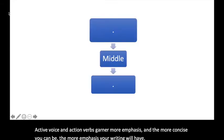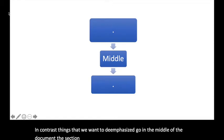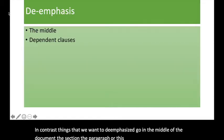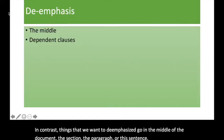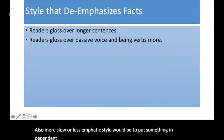In contrast, things that we want to de-emphasize go in the middle of the document, the section, the paragraph, or the sentence. Also, a more slow or less emphatic style would be to put something in dependent clauses or to use being verbs, passive voice. Longer sentences are all ways of de-emphasizing.